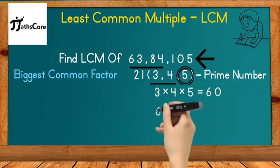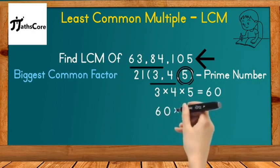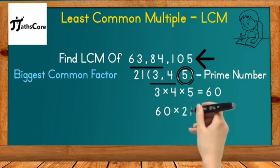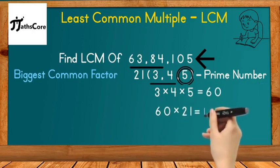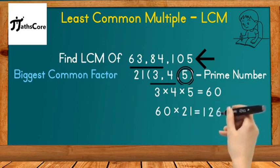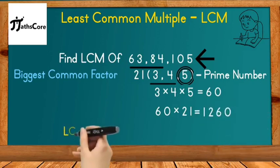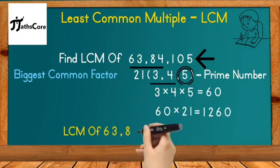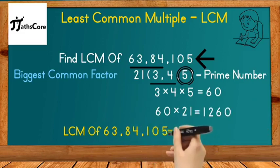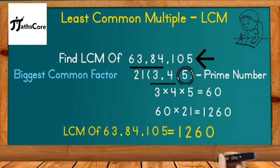Now multiply 60 with 21, the biggest common factor. 21 multiplied by 60 equals 1260. The LCM of 63, 84, and 105 is 1260. This is your final answer.